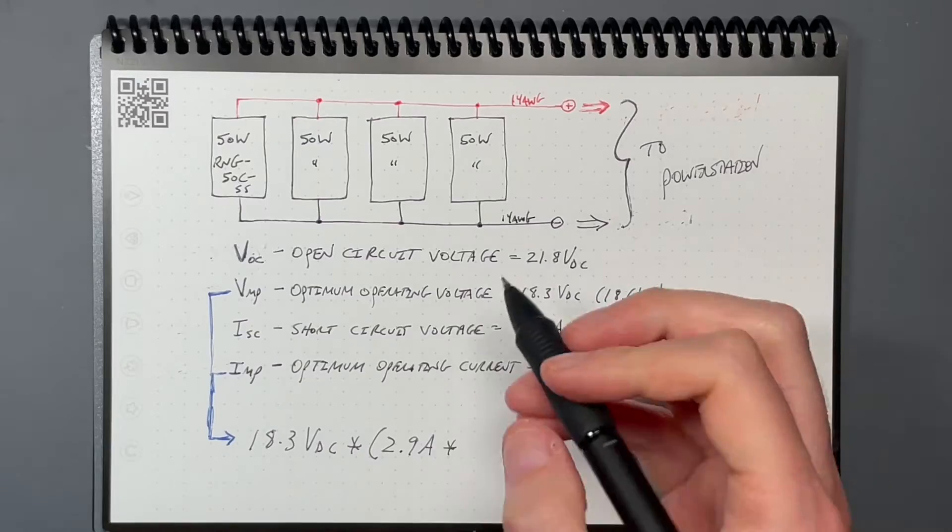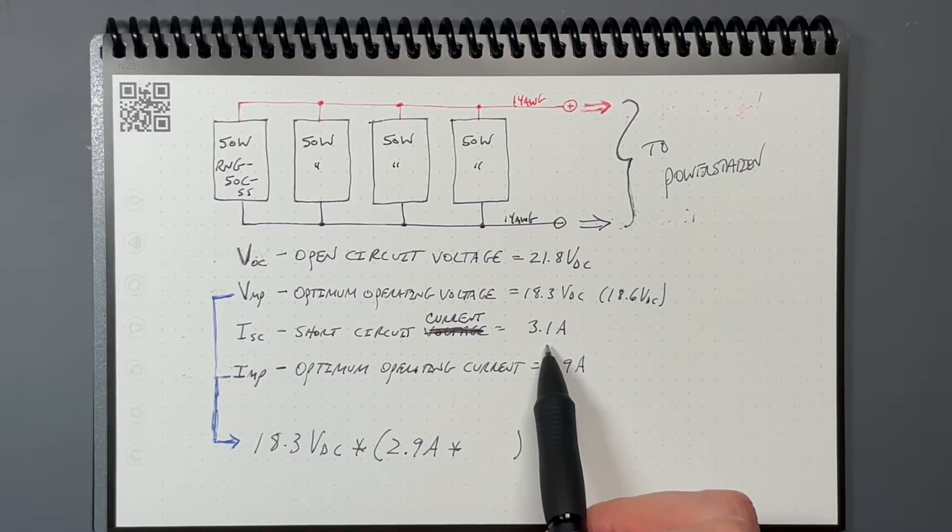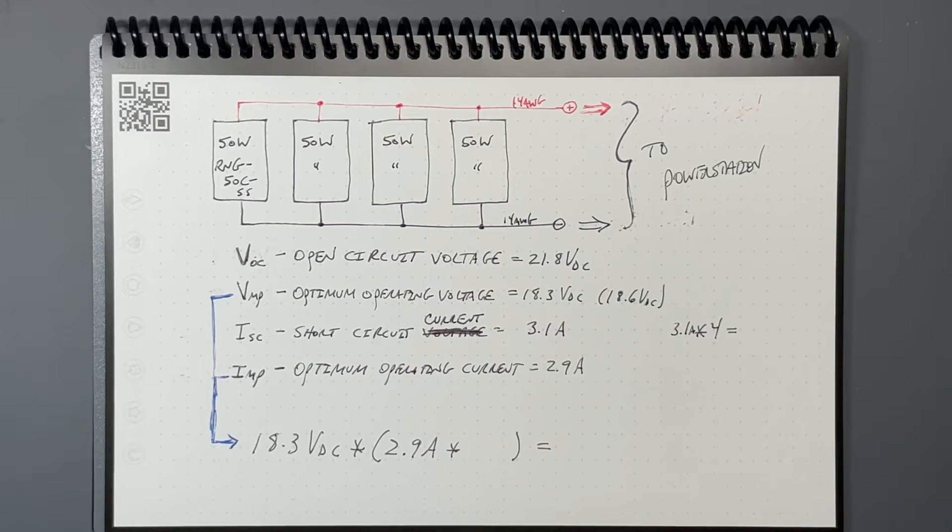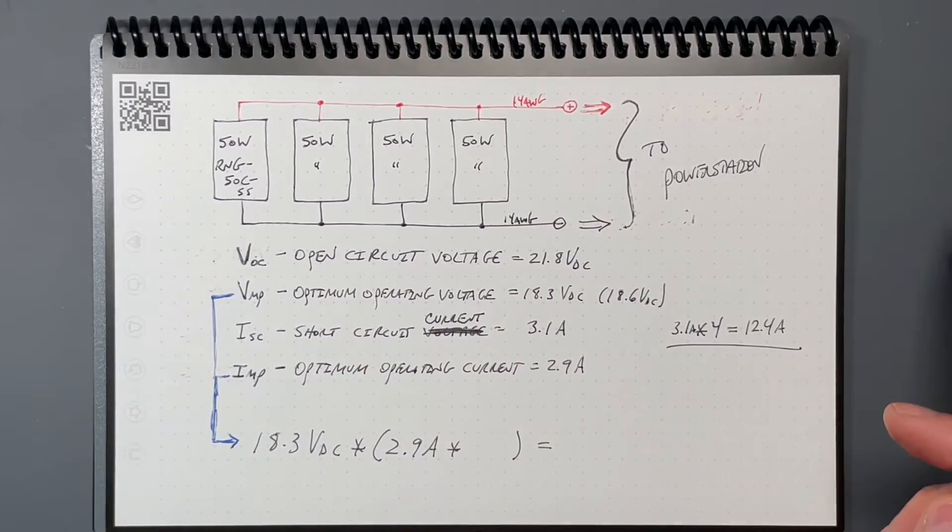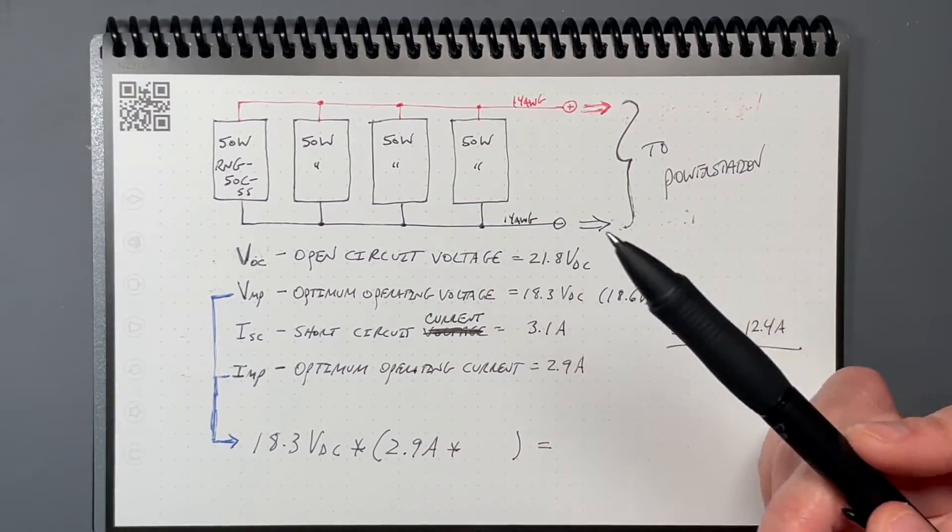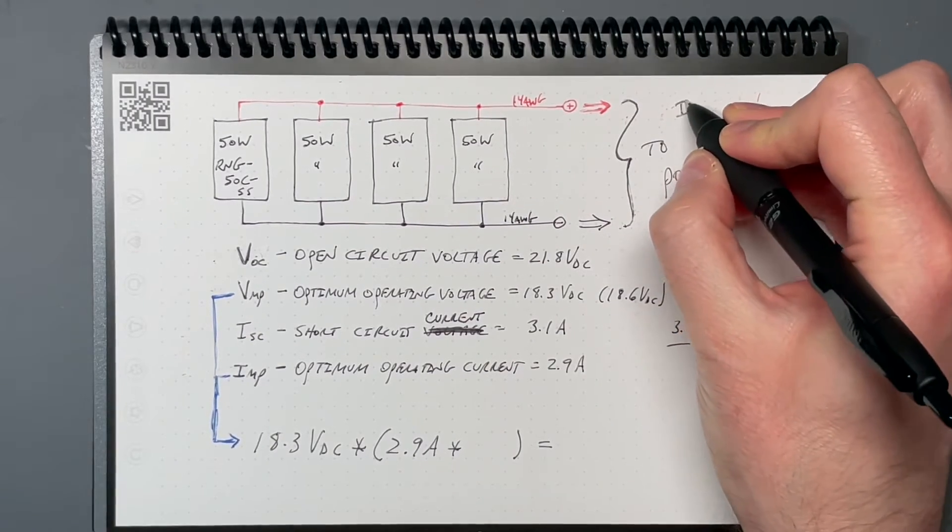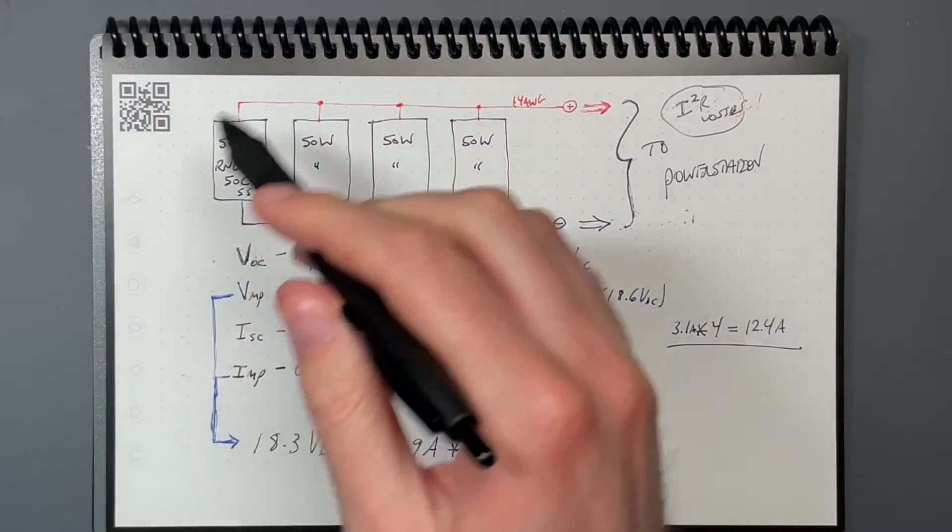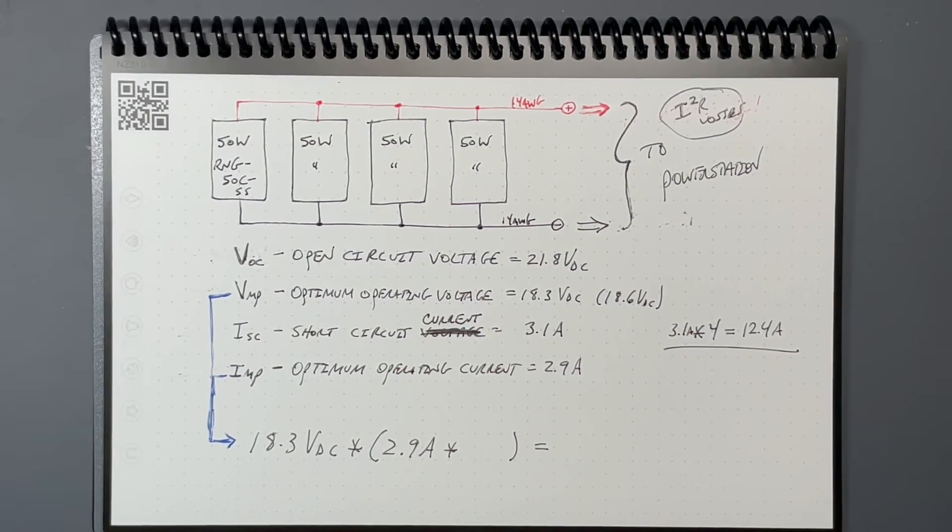Equally important is the short circuit current, which is 3.1 amps. If you have four of these in parallel, you're going to get 3.1 amps times four, which is 12.4 amps. This is how I have it set up. I left it this way because I wanted to be able to use it with a variety of power stations that I have.